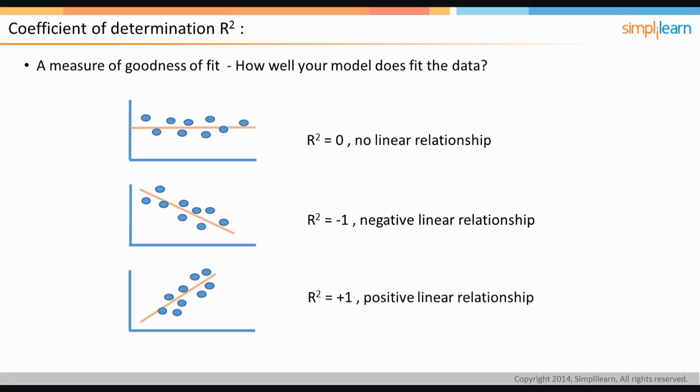The last figure denotes an R squared value of plus one, denoting a positive linear relationship. In the next slide, we will look at ways to determine the goodness of a model.